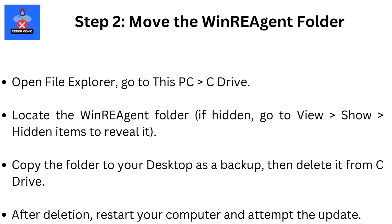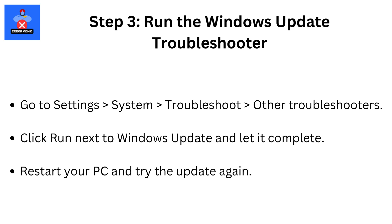Copy the folder to your desktop as a backup, then delete it from C Drive. After deletion, restart your computer and attempt the update. Step 3: Run the Windows Update Troubleshooter. Go to Settings, then System, then Troubleshoot.